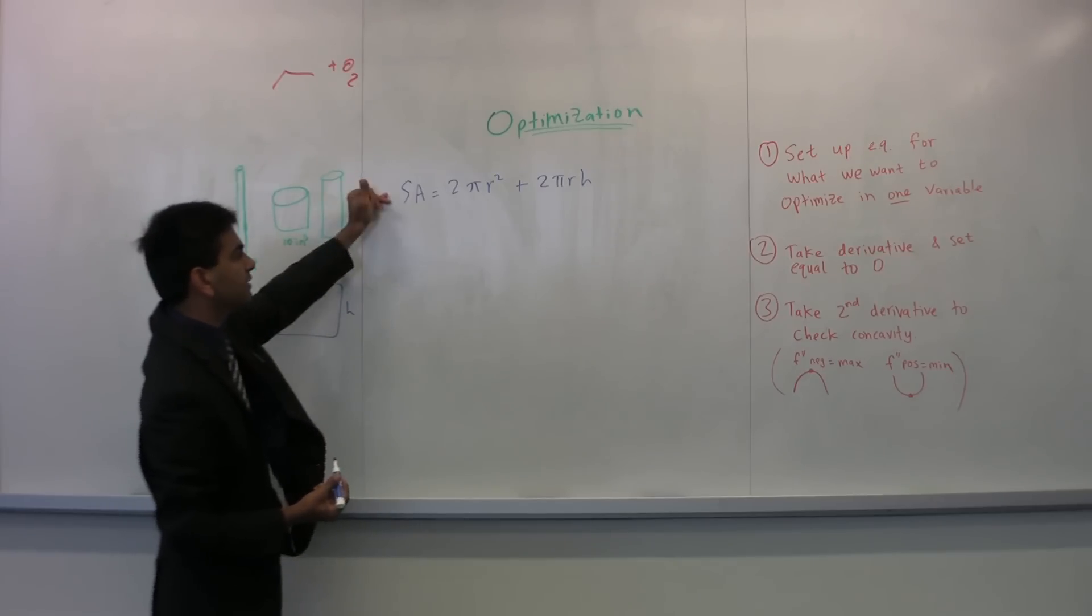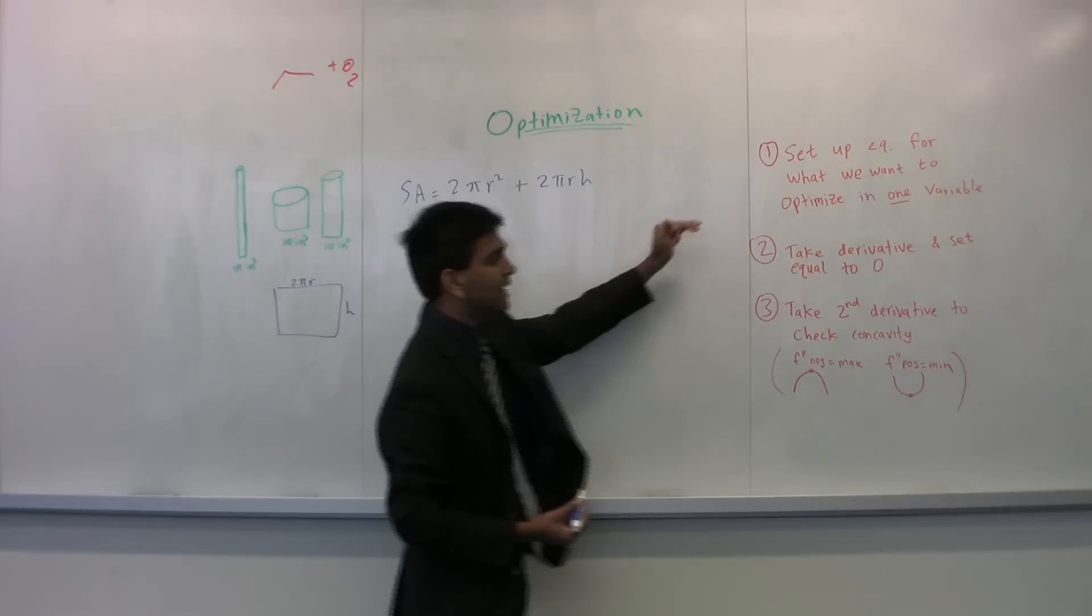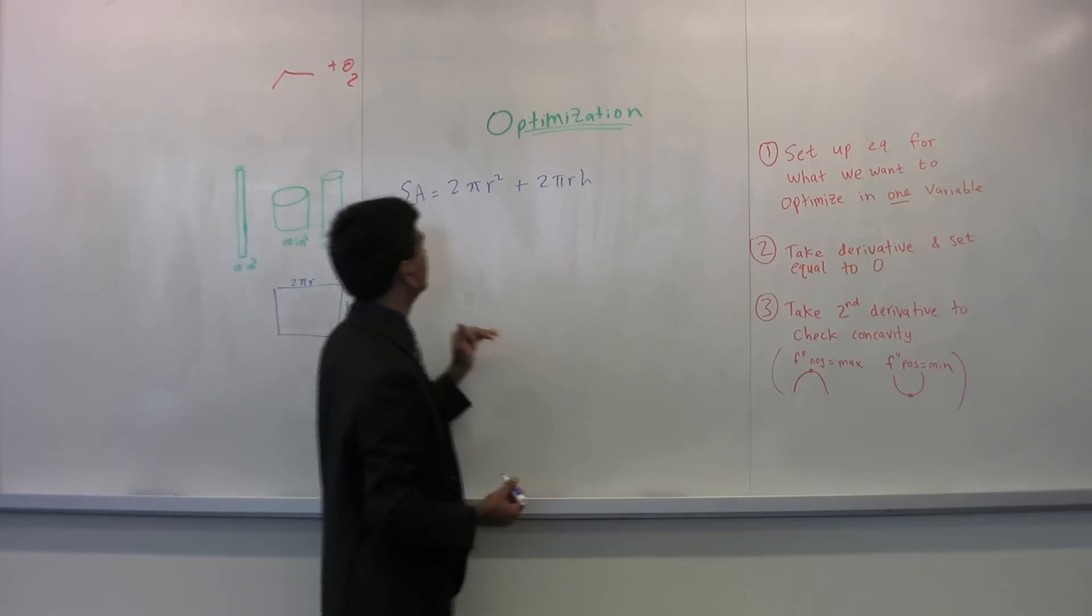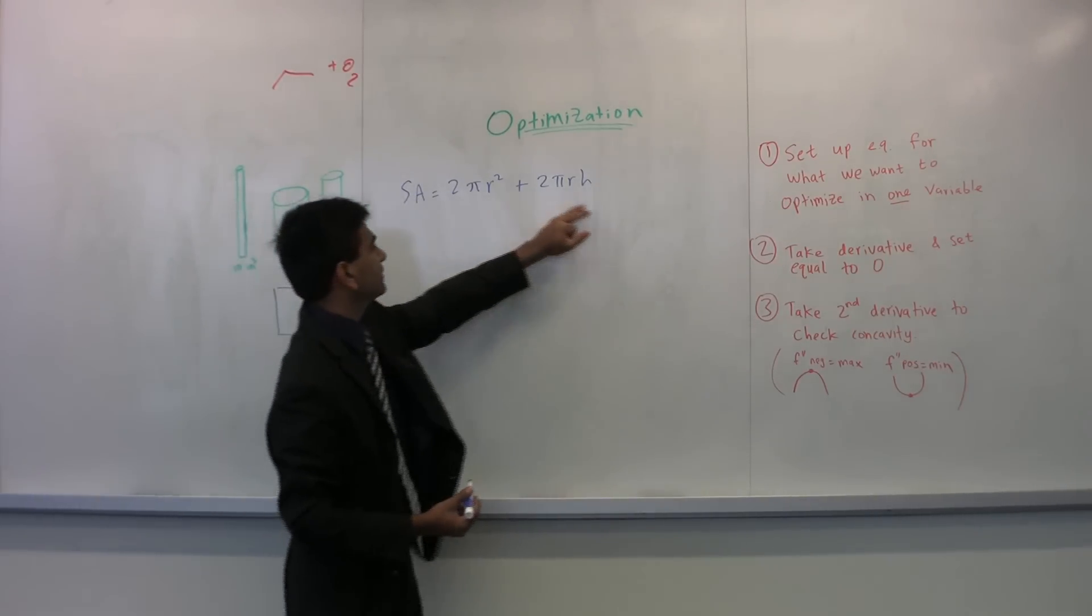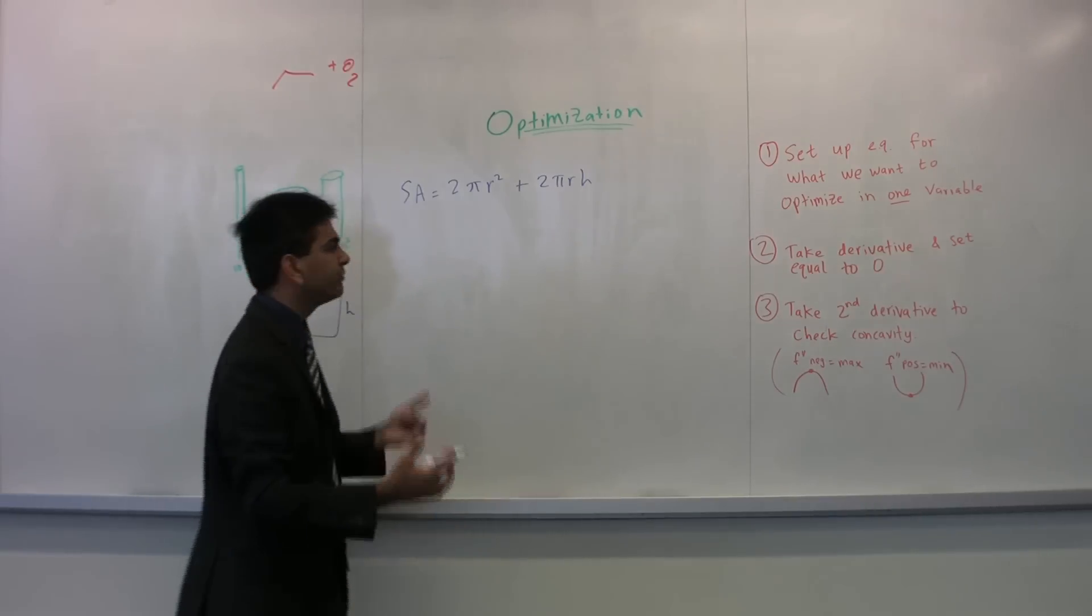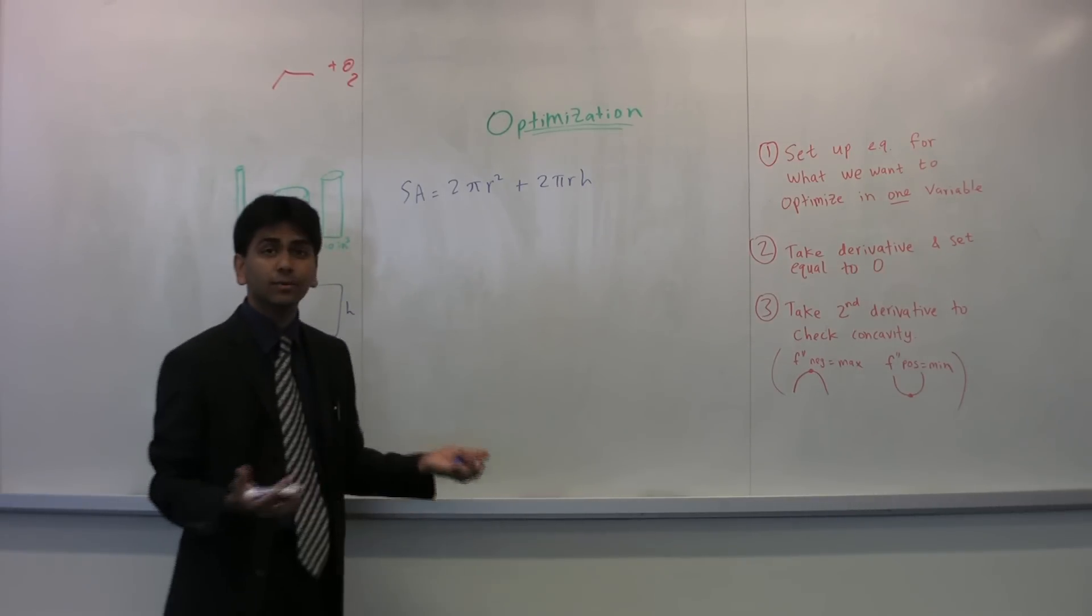So this is what you want to optimize, but we have to do that in one variable. So notice how there's many variables here, actually there's two, there's r and h. So we just want to figure it out in terms of one. How do we do that?